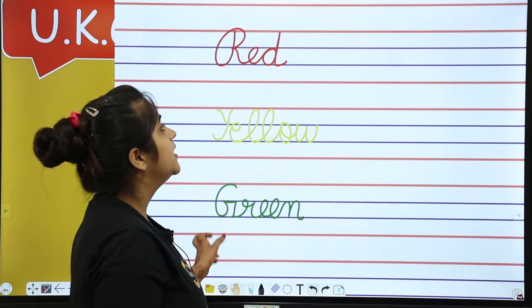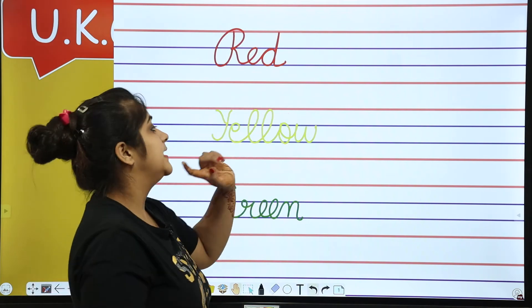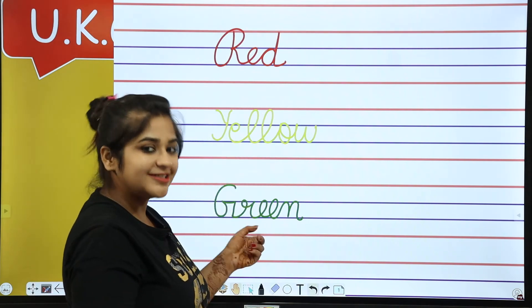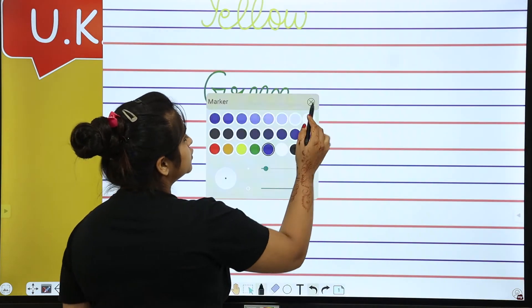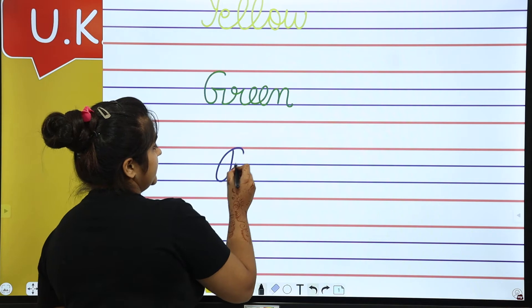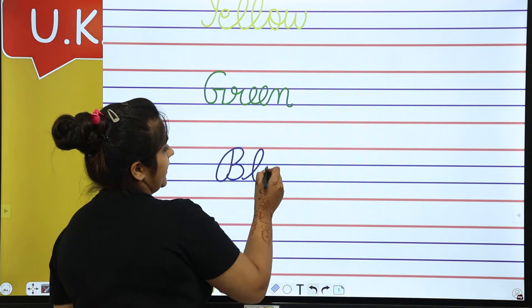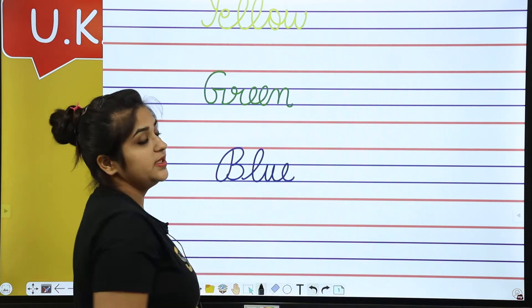Now which colors have we done? Red, yellow, green, and our next color is blue. B-L-U-E, blue.